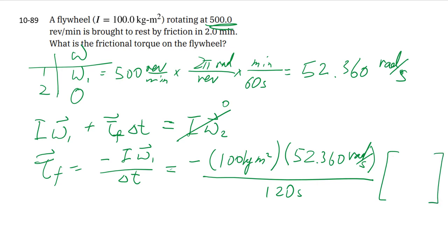Units-wise, you can see that on top we have kilograms meters, let's break it up, times meters divided by second for radians per second, and divided by another second. So you have kilograms meters per second squared.